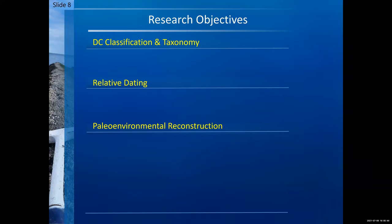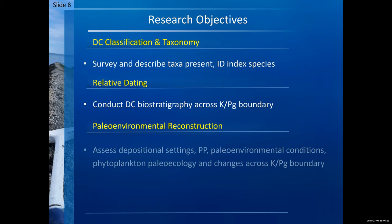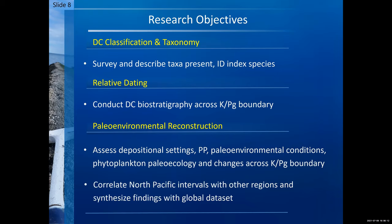For the research objectives, we had classification and taxonomy, which gave us the opportunity to survey and describe the taxa present and identify the index species; relative dating, constructing the biostratigraphy across the KPG boundary; and for paleoenvironmental reconstruction, we could assess the depositional setting, primary productivity, paleoenvironmental reconstructions locally and abroad, phytoplankton paleoecology and changes across the KPG boundary, and correlate the North Pacific intervals with other regions and synthesize these findings with the global dataset.